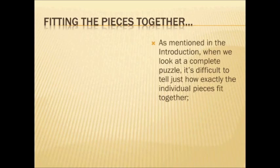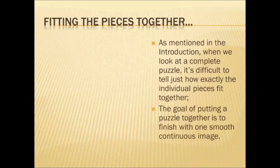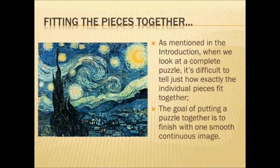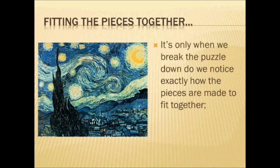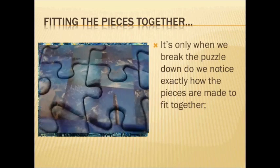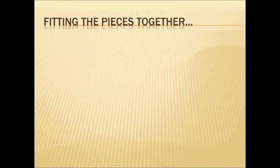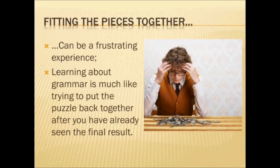As we mentioned in our introduction, when we look at a complete puzzle, it's difficult to tell just how exactly the individual pieces fit together, because the goal of putting a puzzle together is to finish with one smooth continuous image. As you can see in Van Gogh's Starry Night, it looks like the original painting — but actually, this is a picture of a puzzle of Starry Night. It's only when we break the puzzle down that we notice exactly how the pieces are made to fit together. Learning about grammar is much like trying to put the puzzle back together after you have already seen the final result.